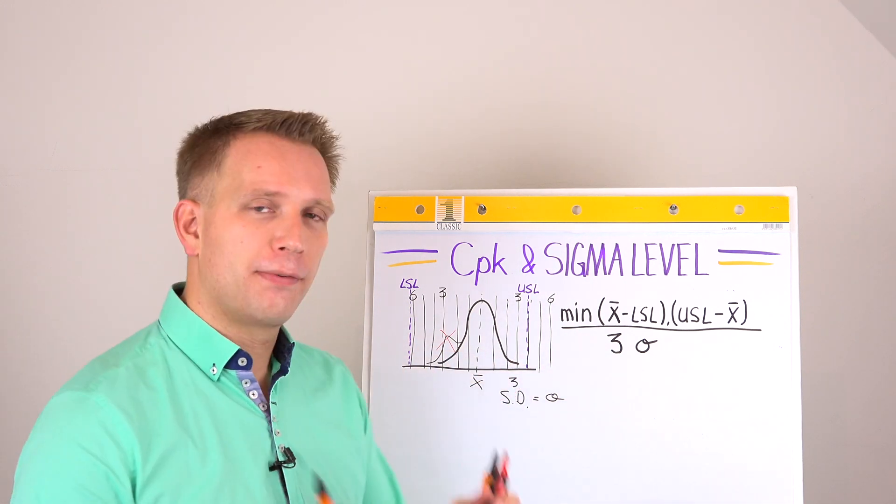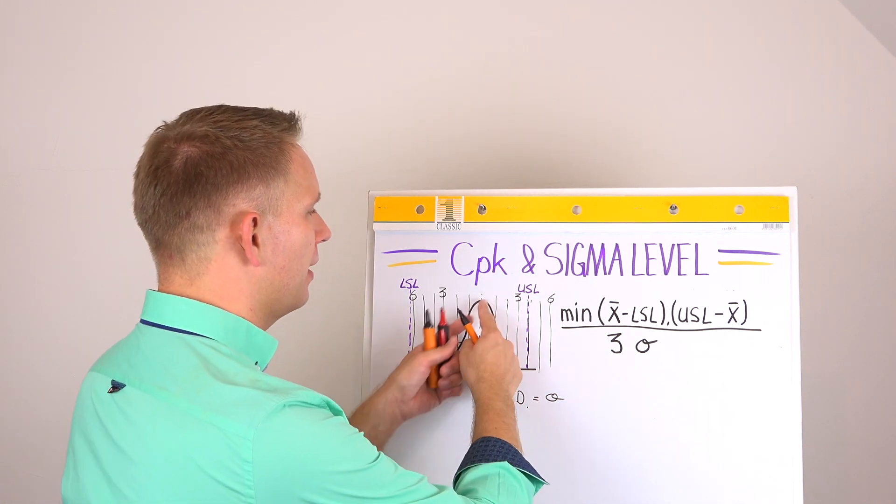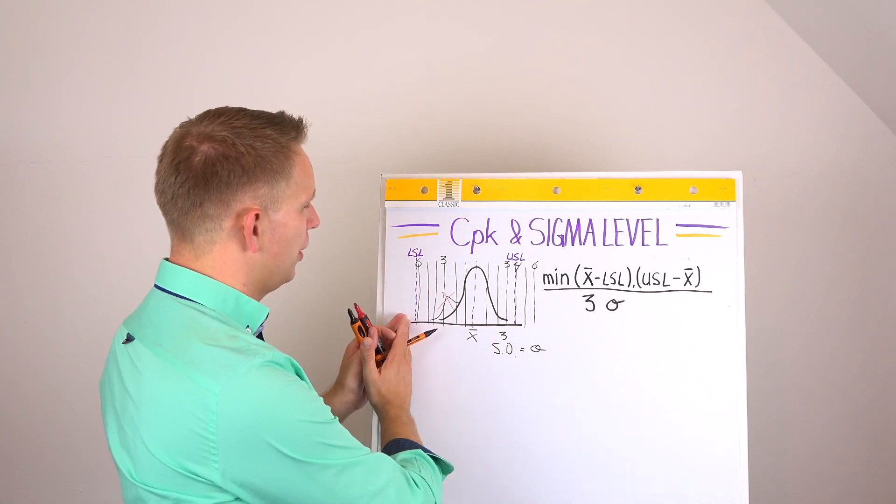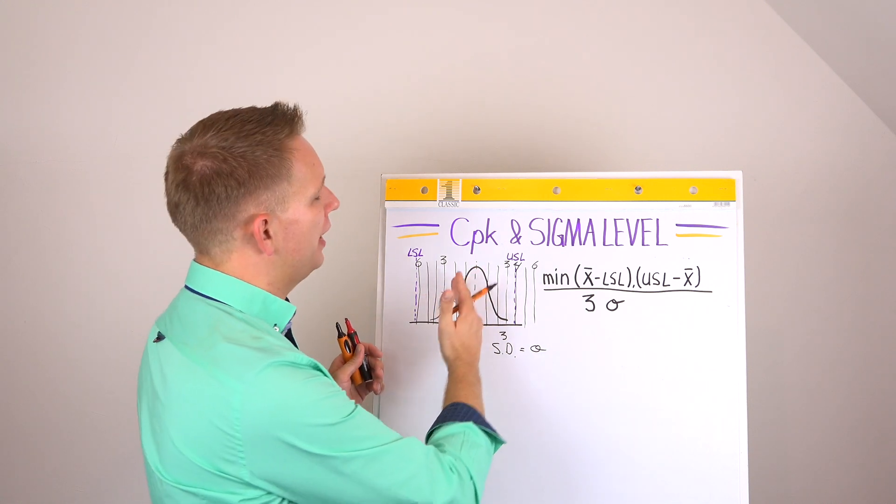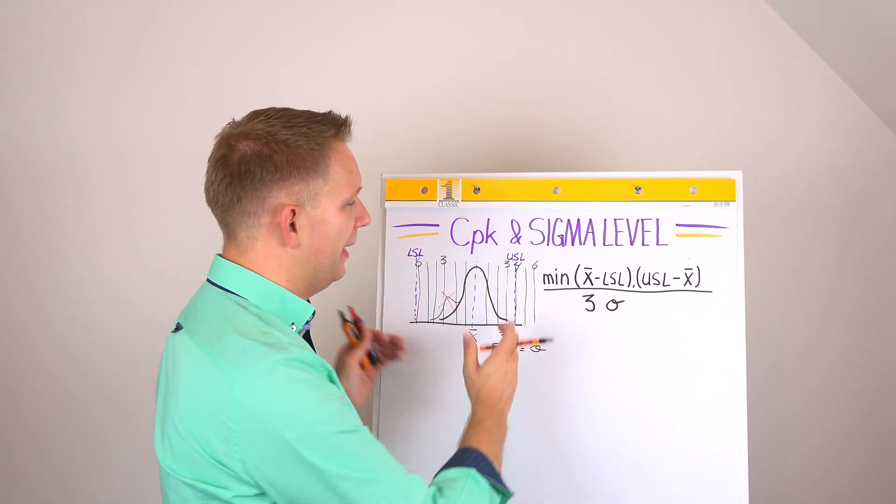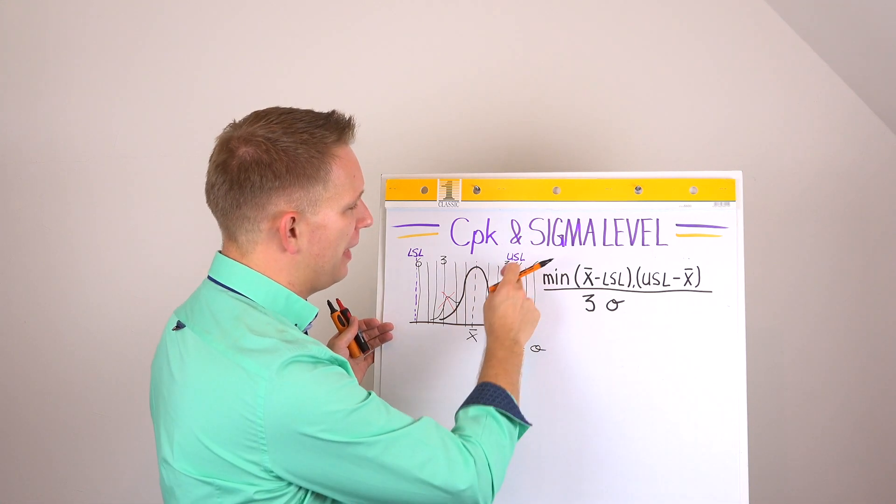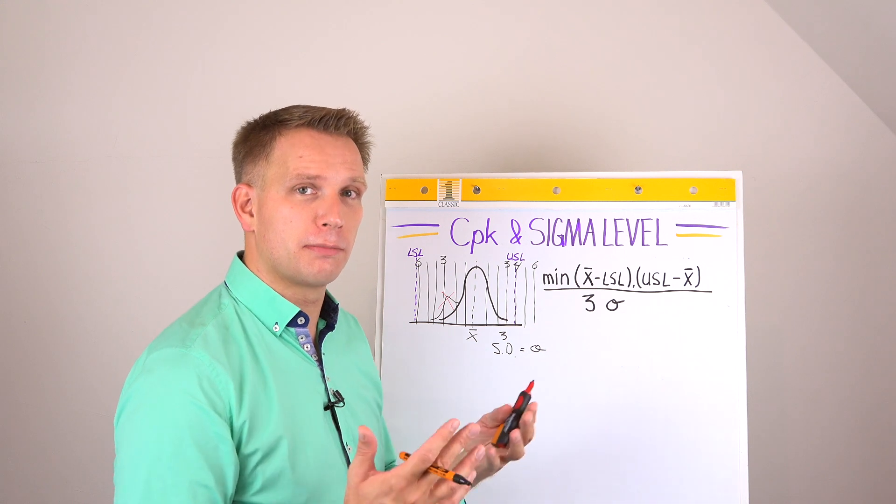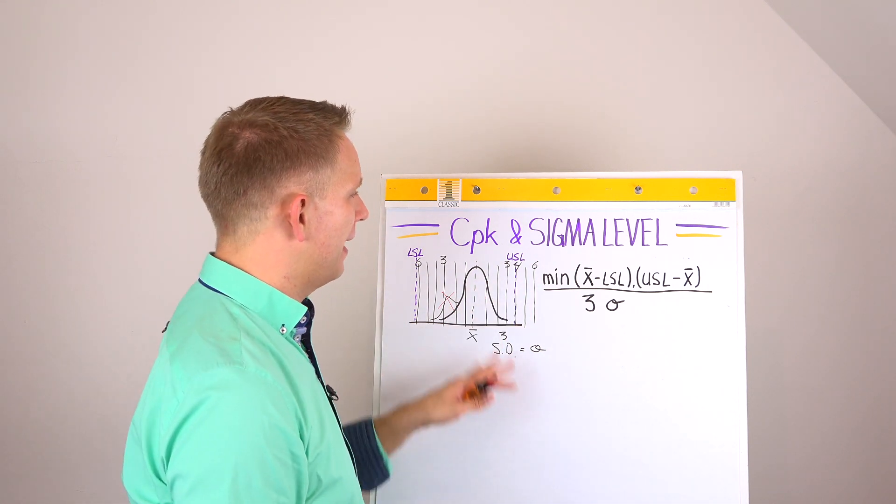And what you are actually going for in six sigma is something that this process doesn't have. That is that you have six standard deviations between the mean and your specification limits. Because this process on the lower specification limit side has got six standard deviations. But on the upper specification limit, six is beyond the specification. It reaches about four standard deviations within our specification. In this case, the upper specification limit.